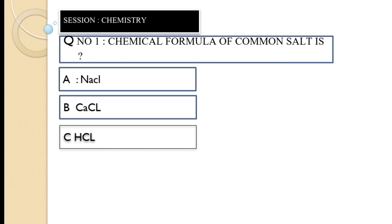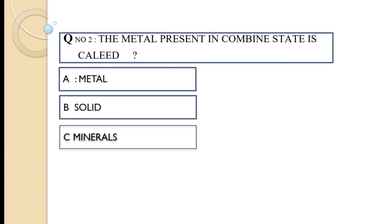Question number one: the chemical formula of common salt is — option A: NaCl, option B: CaCl, option C: HCl. The correct answer is option A, NaCl.